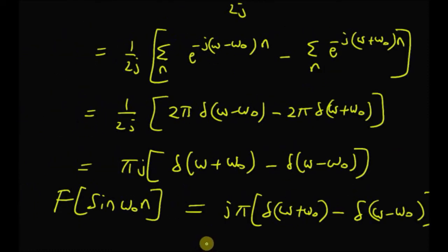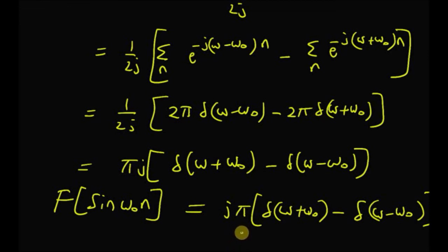To summarize: the DTFT of a complex exponential is given by a shifted delta function, and the DTFTs of cosine and sine sinusoids are given by linear combinations of two delta functions located at ω+ω₀ and ω−ω₀.